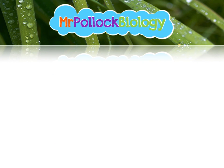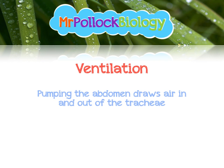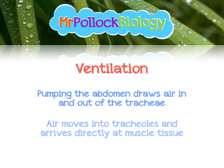But how does the insect actually ventilate its body? It pumps the abdomen in and out, which draws air into and out of the trachea via the spiracles. Air then moves into the tracheals and arrives directly at the muscle tissue. This is a really, really simple system.